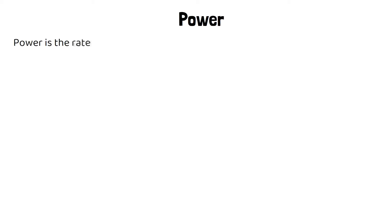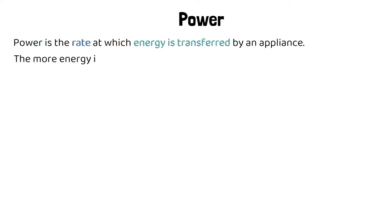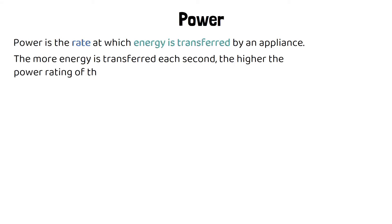To remind ourselves what power is, the definition of power is that it is the rate at which energy is transferred by an appliance or a device. Rate meaning the speed that energy is being transferred at. The more energy is transferred each second, the higher the power rating of that appliance.